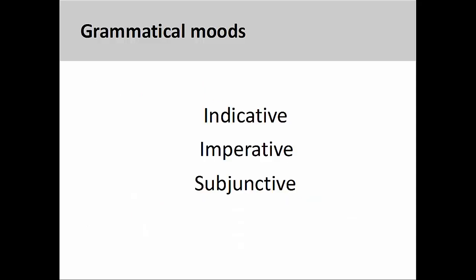German verbs have three moods: the indicative, the imperative, and the subjunctive.